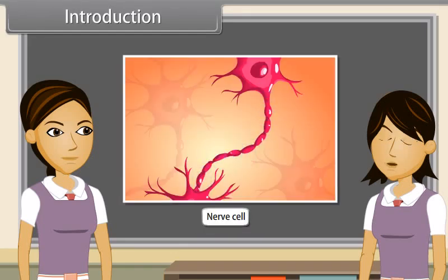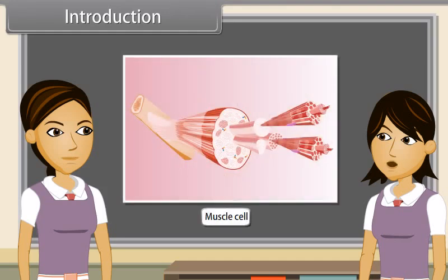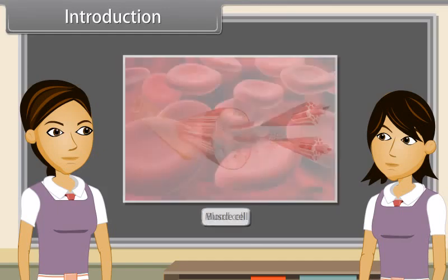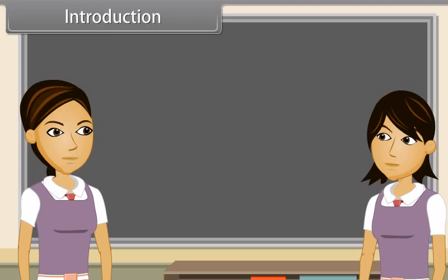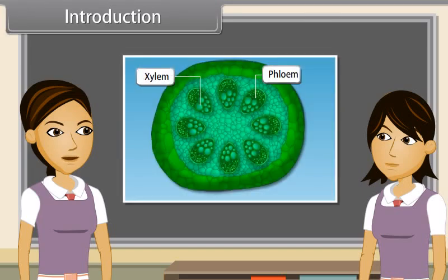Nerve cells carry messages from the brain to every part of the body. Muscle cells contract and relax so that movements are caused. Blood flows to transport oxygen, food, hormones and waste materials. Plants are also living organisms, and xylem and phloem cells conduct food and water from one part to another.